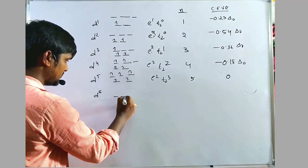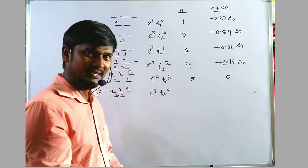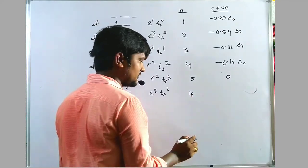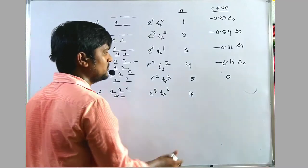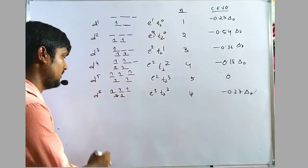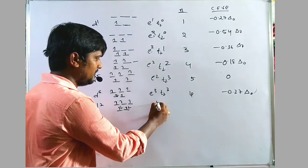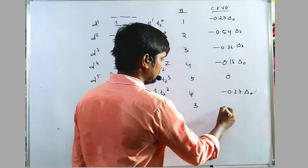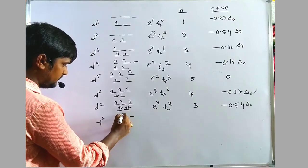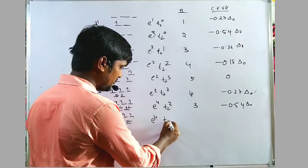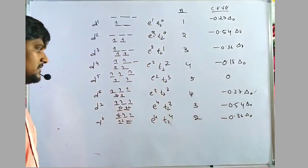For D6 tetrahedral: configuration E³T2³, 4 unpaired electrons. CFSE = minus 0.27 × 3 + 0.18 × 3 = minus 0.81 + 0.54 = minus 0.27 ΔO. For D7: E⁴T2³, 3 unpaired electrons, CFSE = minus 0.54 ΔO. For D8: E⁴T2⁴, 2 unpaired electrons, CFSE = minus 0.36 ΔO.